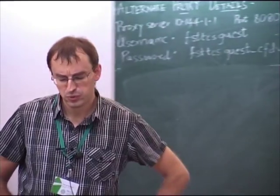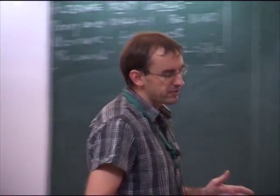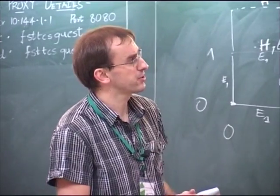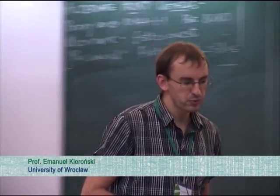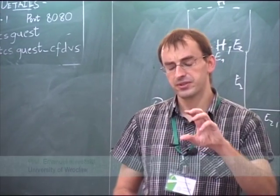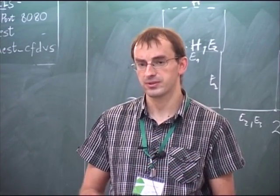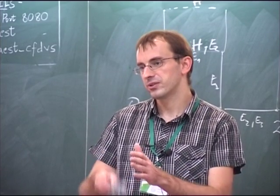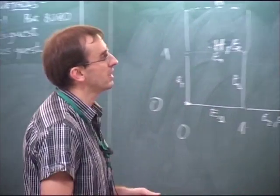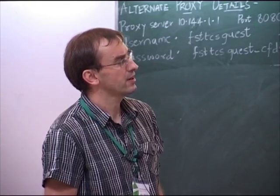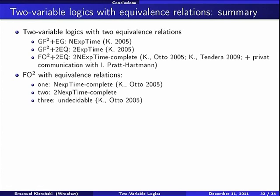What else? So if we consider two variable logic with some specific number of equivalence relation, then in case of one equivalence relation, the satisfiability problem is NExpTime complete. And we can show finite model property, exponential model property. So simply the proof is just take proof, the first step is to show that every satisfiable formula has a model with small classes and then choose only some number of these classes to construct a model. This is quite simple. Two relations are 2NExpTime complete as I tried to explain in some sketches. And three are undecidable. So which I also sketched to you.